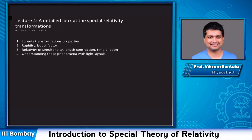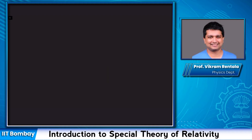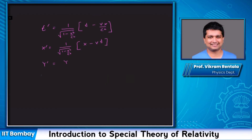Let's begin by writing down the Lorentz transformations derived in the last class. These are the dictionary of Special Relativity, allowing us to translate observations of space-time points from one observer to a second observer. The transformations are: t′ = (1/√(1 − v²/c²)) · (t − vx/c²), x′ = (1/√(1 − v²/c²)) · (x − vt), y′ = y, and z′ = z.